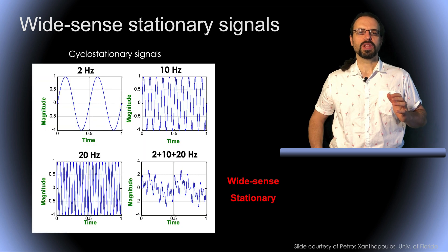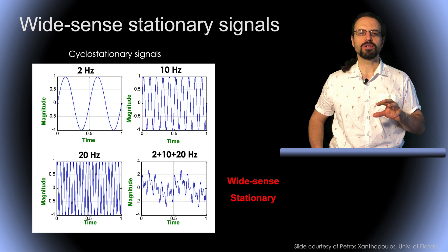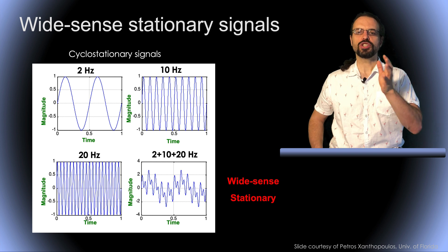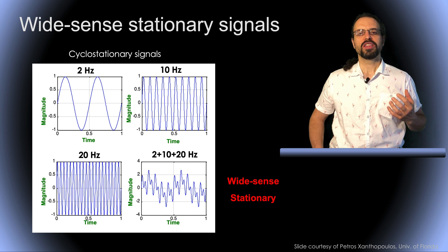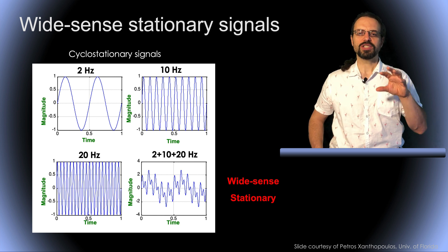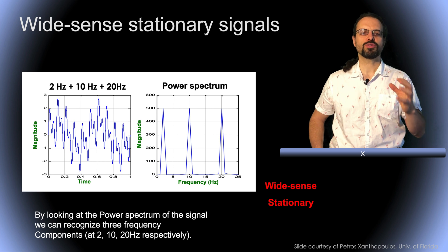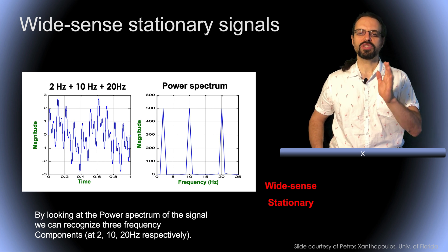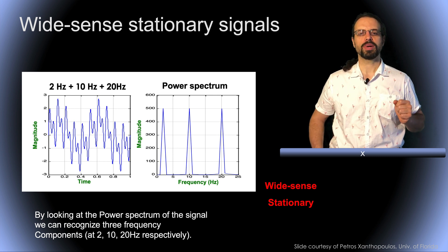So let's look at an example. Here we have different stationary sinusoid, one at 2 Hz, one at 10 Hz, one at 20 Hz. If we simply add the signal, as this is represented in the bottom right corner, you can see that this signal has a complex feature. And it is stationary because it is the sum of stationary signals. Now, if we want to analyze this signal to see what the signal is made out of, we can perform a power spectrum. By looking at the power spectrum of the signal, we can recognize three frequency components of the signal at 2, 10 and 20 Hz. So in the next slides, we're going to see how to build such a power spectrum.